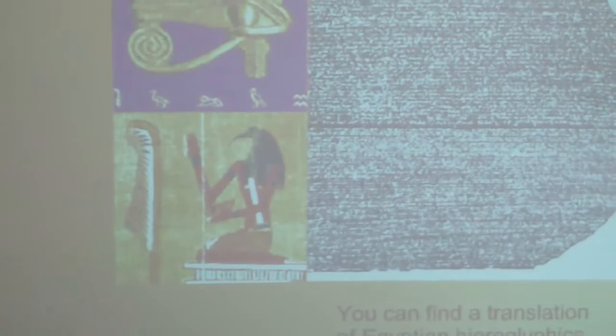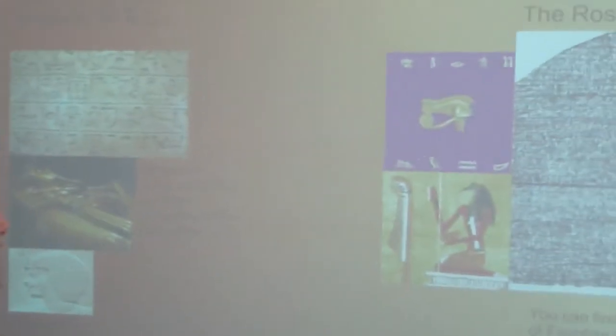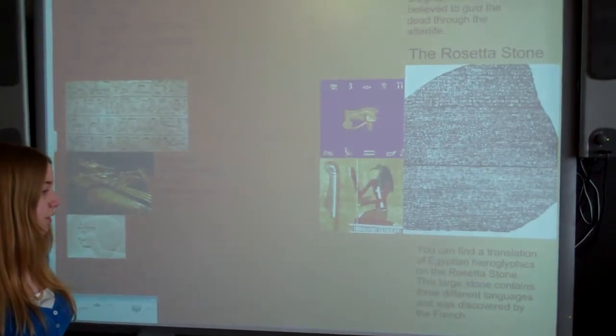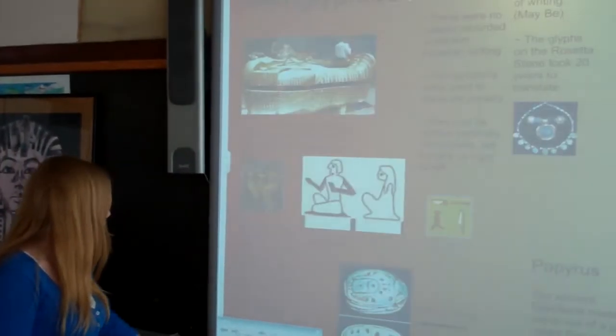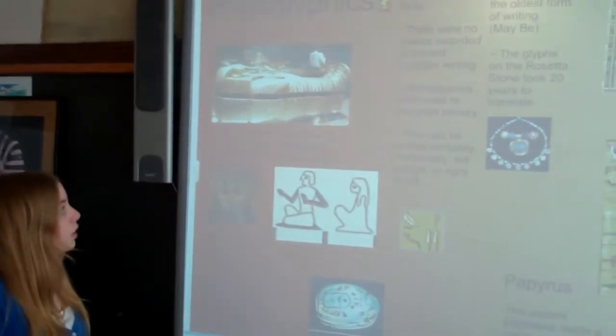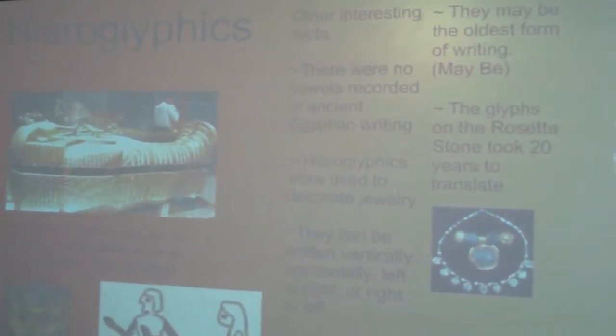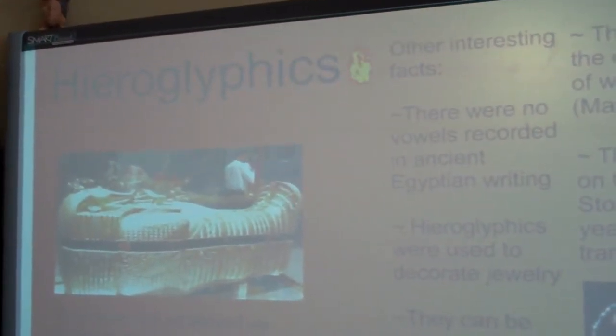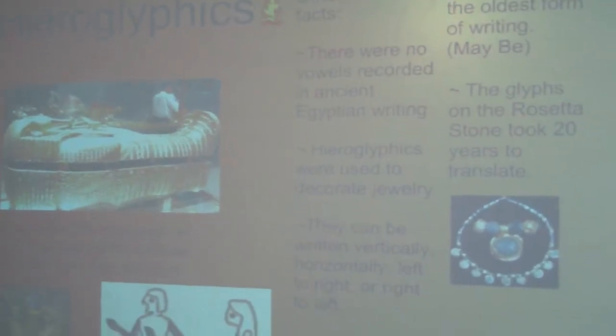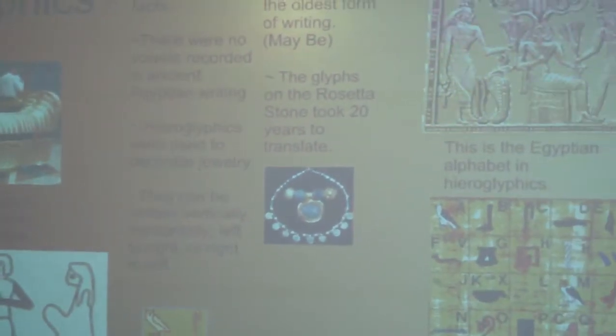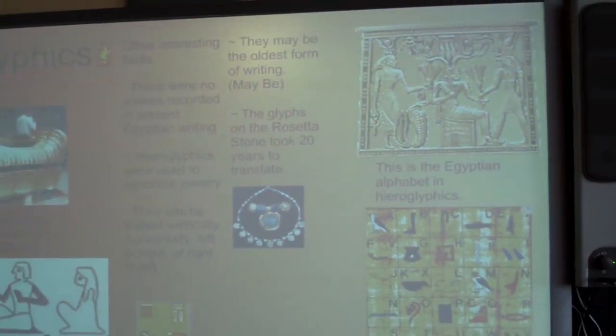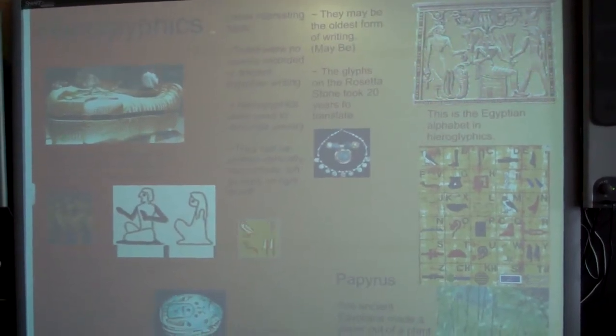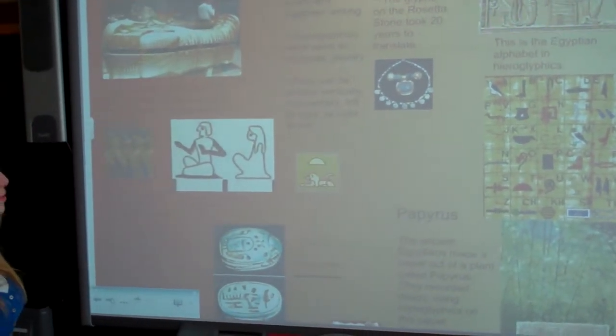This is the Rosetta Stone, and you can find a translation of Egyptian hieroglyphics on the Rosetta Stone. This large stone contains three different languages and was discovered by the French. Some other interesting facts about hieroglyphics are there were no vowels recorded, and they were used to decorate jewelry. They can be written vertically, horizontally, left to right, or right to left, and they may be the oldest form of writing. And the glyphs on the Rosetta Stone took 20 years to translate.